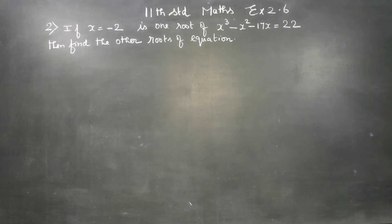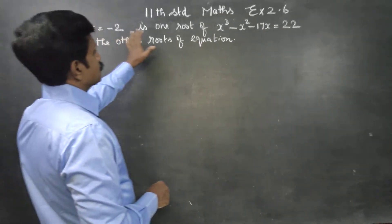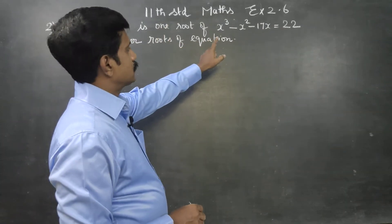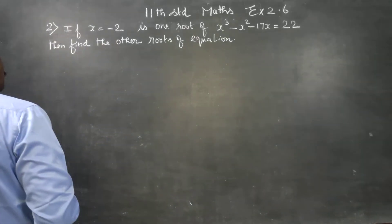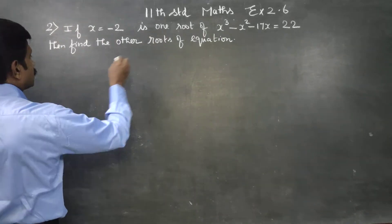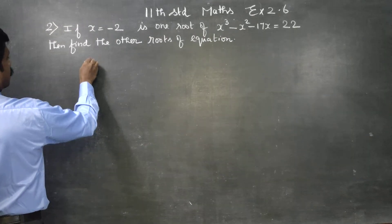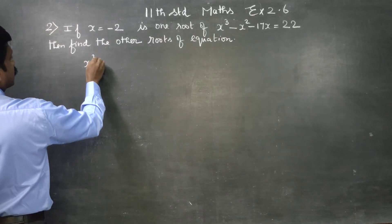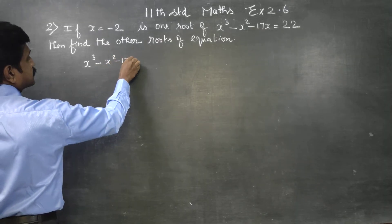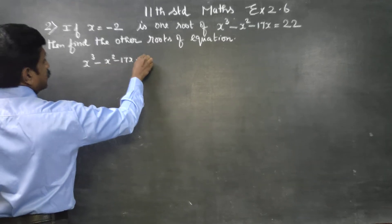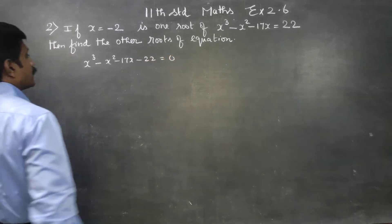Dear students, in exercise number 2.6, basic algebra, x is equal to minus 2 is one root. Find the other roots of the equation. It is a cubic equation: x cube minus x square minus 17x minus 22 is equal to 0.